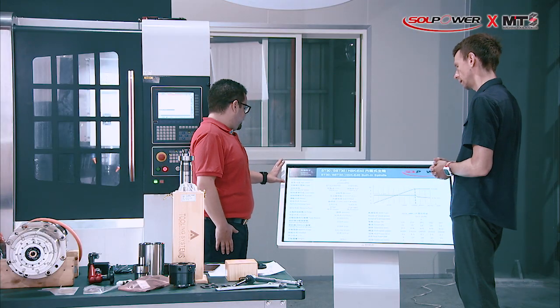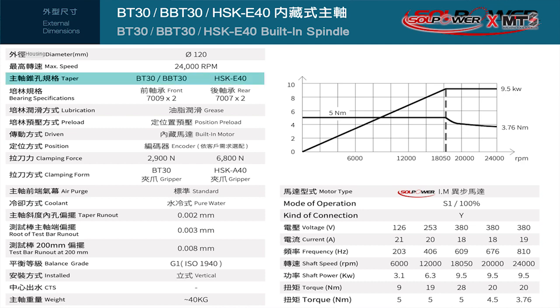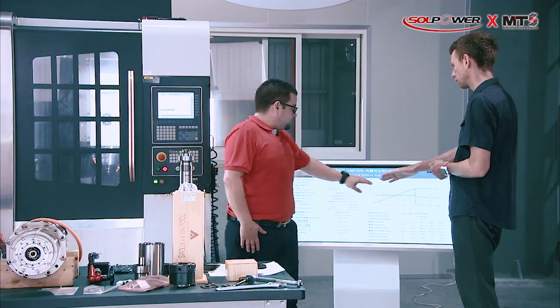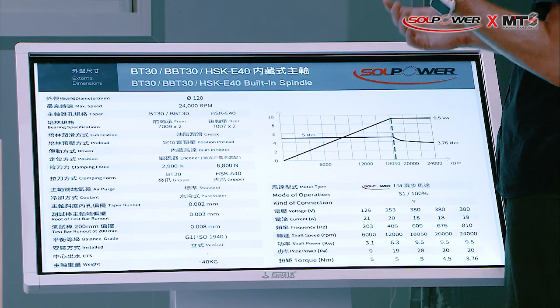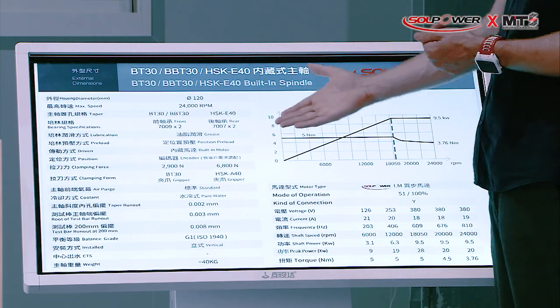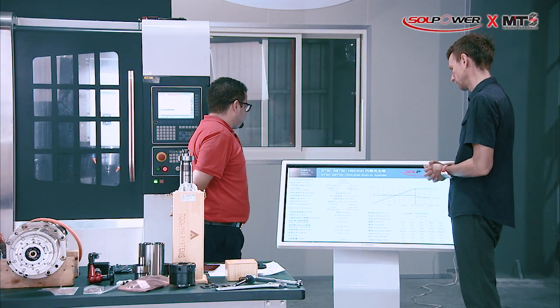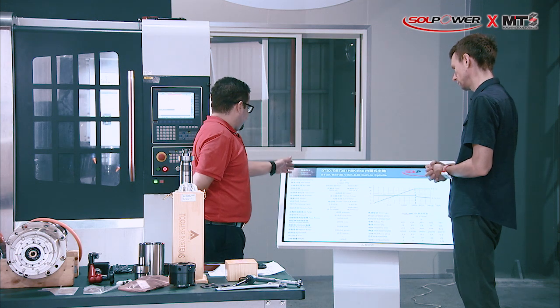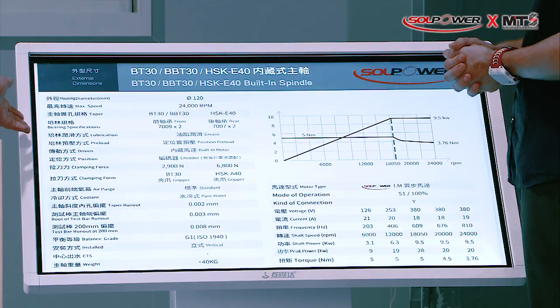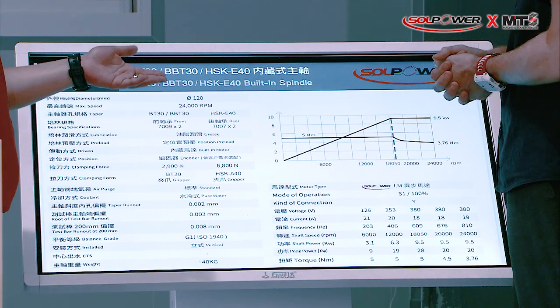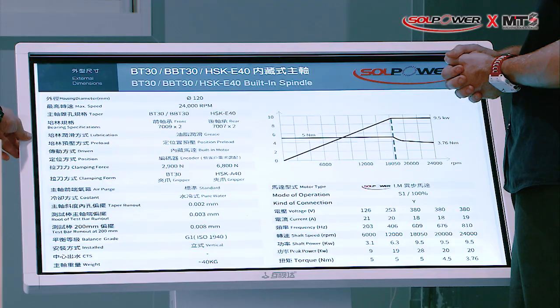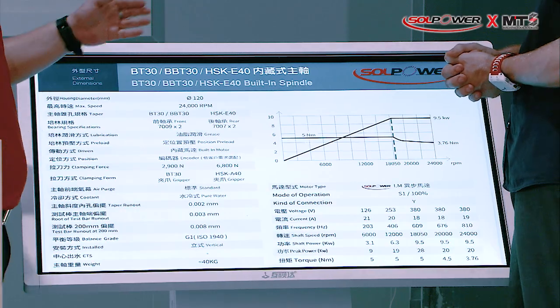The third thing we have to determine before starting the prototype is the bearing calculation procedure — what kind of tool system we're using. Most of these parameters can be customized: the housing, the speed, the bearing specification, and the lubrication — whether it's grease or oil-air. Some customers require a synchronous motor, others require different motor types.